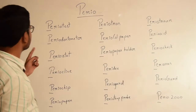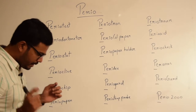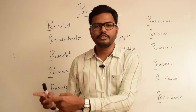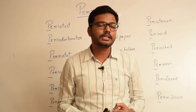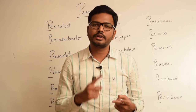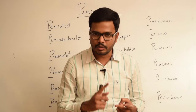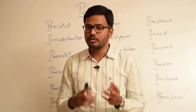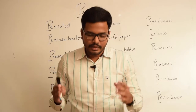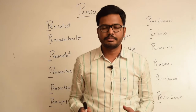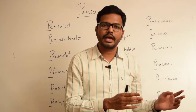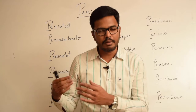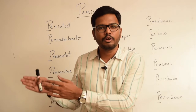First, let's see what a Periotest is. Periotest is a measuring instrument used for evaluating osseointegration in case of dental implants and also in case of natural teeth. It's used for diagnosis and evaluation of various periodontopathies, for assessment of occlusal load, tooth mobility, and also to assess the progress of treatment. It works on an electro-mechanical principle and has a scale ranging from minus 8 to plus 50. The lower the value, the greater is the stability or damping effect of that particular implant or natural tooth.